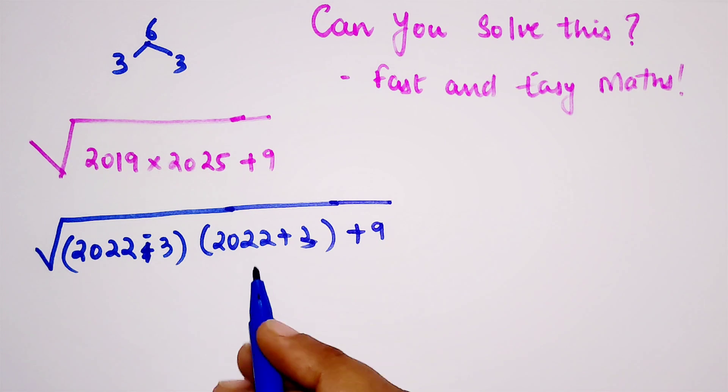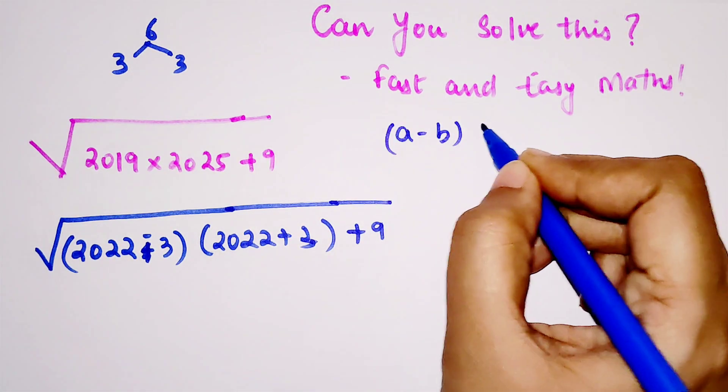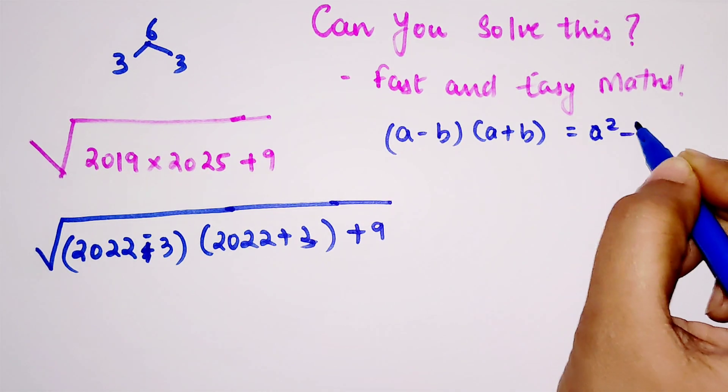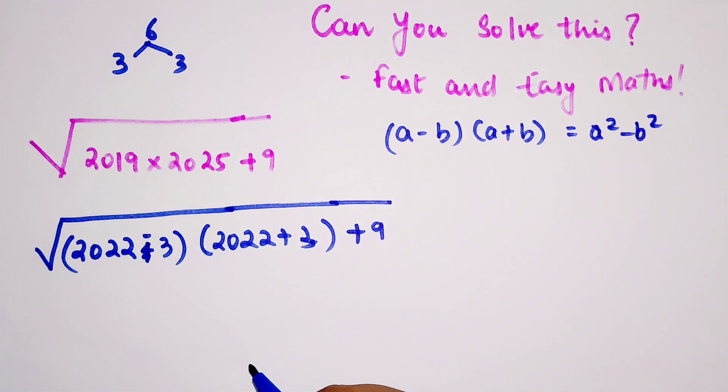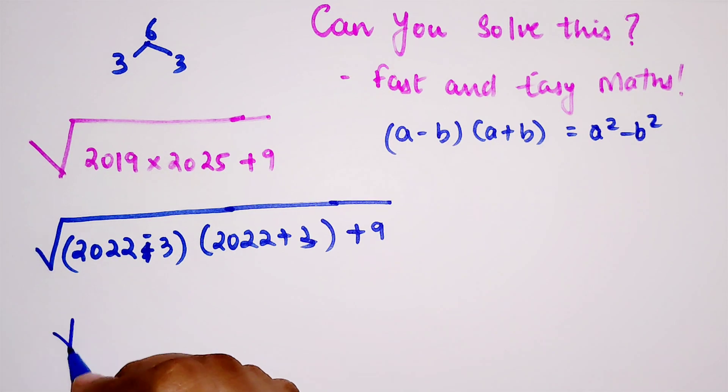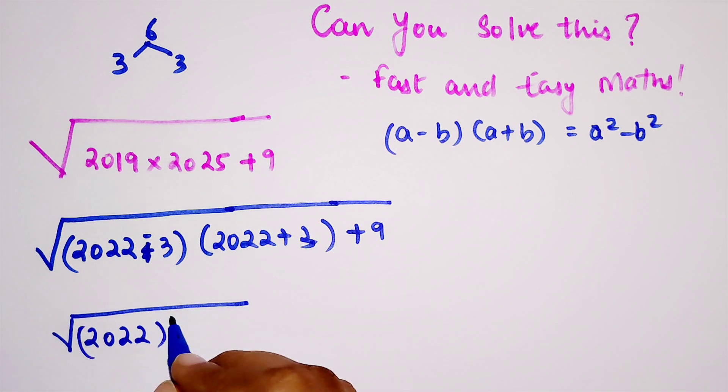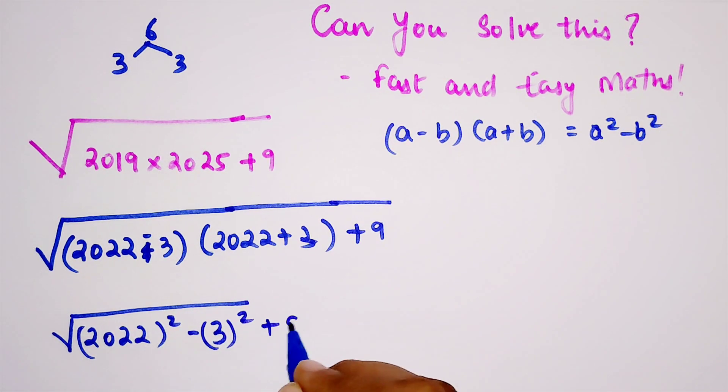If you look closely, this is of the form (a-b)(a+b), which gives you a² - b², correct? So here I can write this as 2022² - 3² + 9.